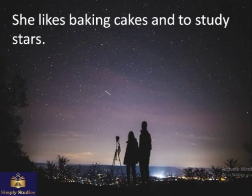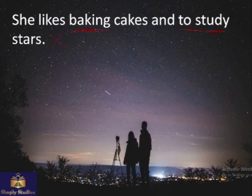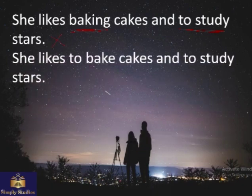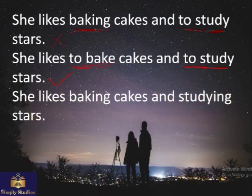Another example: 'She likes baking cakes and to study stars.' This doesn't sound right. It should be either 'She likes to bake cakes and to study stars,' or 'She likes baking cakes and studying stars.' Both are correct forms — both verbs are used in the same grammatical structure.